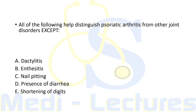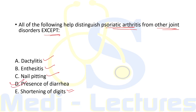Next question: all of the following help distinguish psoriatic arthritis from other joint disorders except. Dactylitis, enthesitis, nail pitting, and shortening of digits (arthritis mutilans) are all correct distinguishing features. The correct answer — the one that does NOT help distinguish — is presence of diarrhea, which is not seen in psoriatic arthropathy.